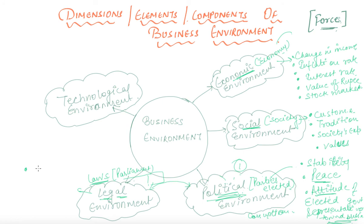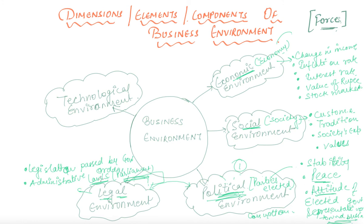Coming toward examples of the legal environment: your various examples are legislation passed by government — it is dependent upon the parliament, which is formed by different political parties. Secondly, administrative orders, and court judgments. Decisions rendered by different agencies at every level of government, whether it is your state, central, or local government — these are the examples of the legal environment.